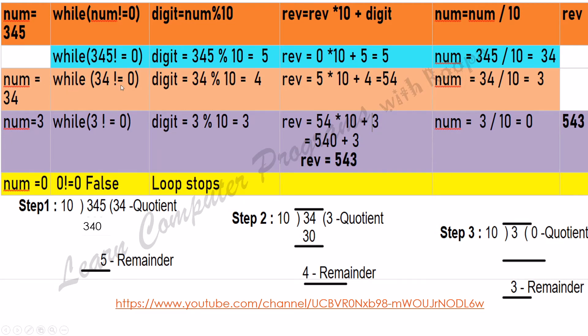Now again it goes into the while loop: 34 is not equal to 0, and then we do 34 mod 10. Please see here step 2. So 34 mod 10 will give 4 as the remainder and 3 as the quotient.